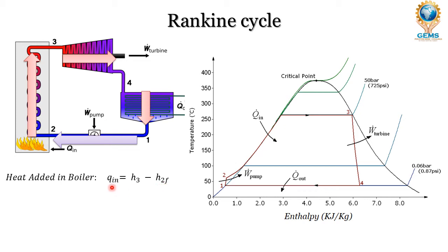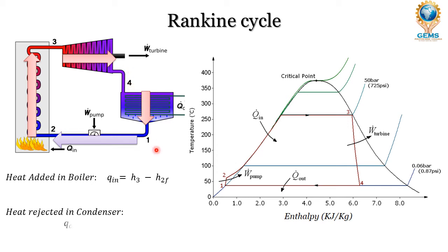The heat input Q_in is between points 3 and 2, referred to in terms of enthalpy as H3 minus H2F. The heat rejected in the condenser is between points 4 and 1, also represented in enthalpy as H4 minus H1F.